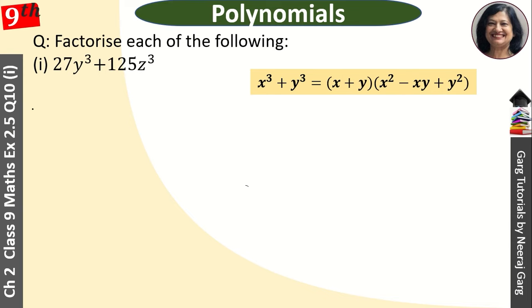How can we write this identity? We can write 3y whole cube. If we multiply 3y whole cube, then it will be 27y³. And 125z³ is 5z cube.